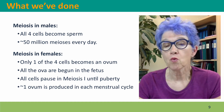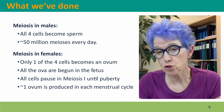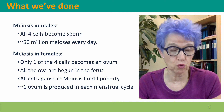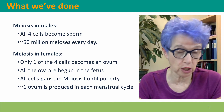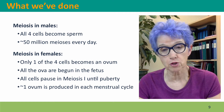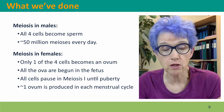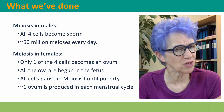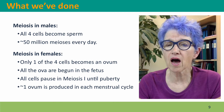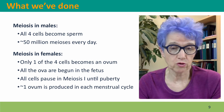One difference is what happens to the four cells that meiosis normally produces. In males, all four of those cells become sperm. In females, only one of those cells is really a cell.